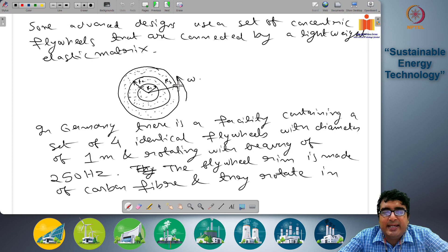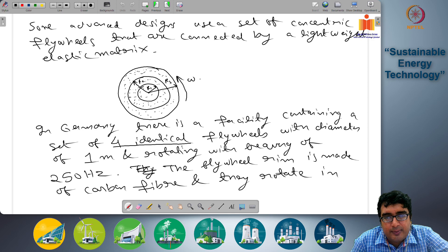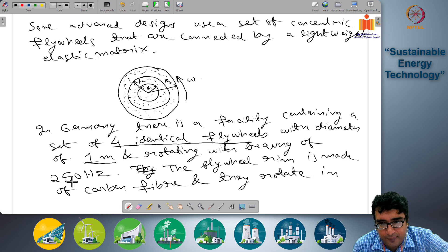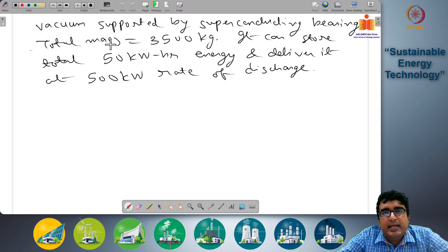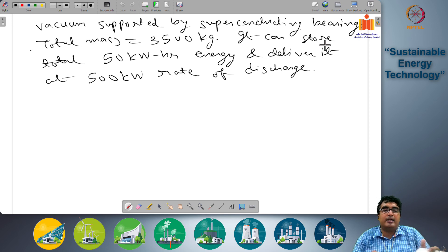It can store total 50 kilowatt hour energy and deliver it at 500 kilowatt rate of discharge. In this system, we have a set of four identical flywheels with one meter diameter, so radius R is 1. It's rotating at a frequency of 250 hertz. The flywheel rim is made of carbon fiber. We will discuss the materials of flywheel in detail and what their advantages and disadvantages are. And they rotate in vacuum supported by superconducting bearings. These superconducting bearings ensure that the frictional losses due to these bearings are minimized, so it helps in preventing the rotation energy being dissipated due to frictional losses. The total mass of these four flywheels is 3500 kg, so it's extremely heavy. And it can store around 50 kilowatt hour of energy and deliver it at 500 kilowatt rate of discharge.